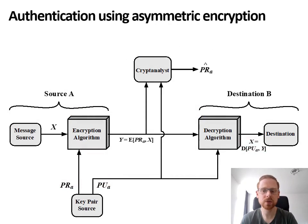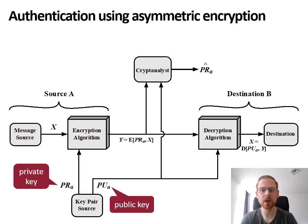Public key cryptography can also be used to provide authentication. The goal here is no longer to keep a message secret while it's being transmitted, but to ensure that the message is not altered during transmission. Again, we make use of a public and a private key; however, the use is inverted. The private key is used in the encryption step, while the public key is used in the decryption step.